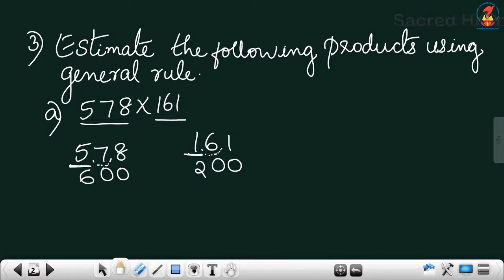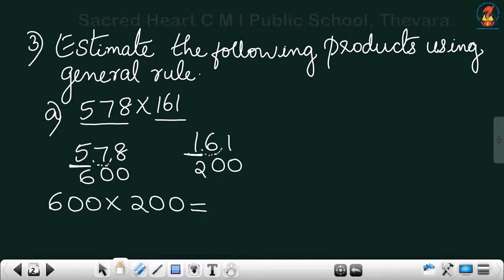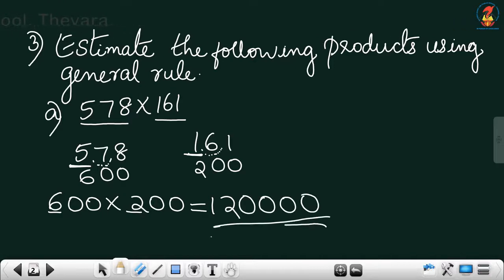So we are multiplying 600 by 200. We already studied this in class 5 — just multiply the digits: 6 into 2 is 12. Then count the number of zeros in the question: there are 4 zeros, so put 4 zeros in the answer. Instead of doing long multiplication, you can write the answer directly. Just multiply the digits and count the zeros in the question, then write those zeros in the answer.